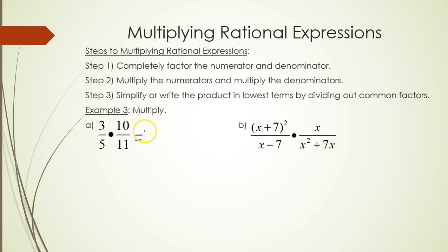So in part a, recall how to multiply fractions together. You multiply the tops together. You multiply the bottoms together. So on top, I have 3 times 10. On the bottom, I have 5 times 11. 30 over 55. Divide top and bottom both by 5 to give you 6 over 11.